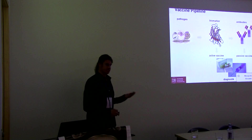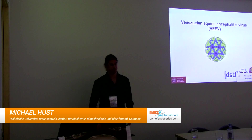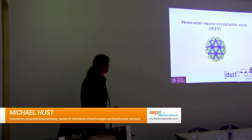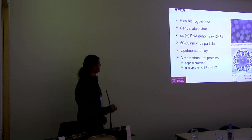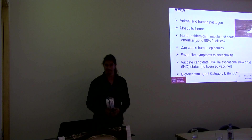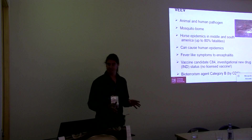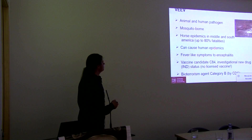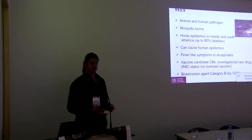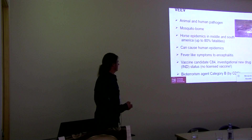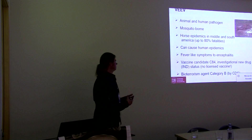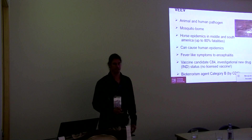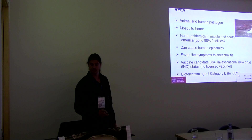Now I will focus more on antibodies in the biodefense field. The first example is Venezuelan equine encephalitis. Venezuelan equine encephalitis belongs to the group of alphaviruses — RNA viruses of 60 to 80 nanometers in size. They mainly infect horses but can also cause human epidemics, with symptoms ranging from fever-like illness up to encephalitis.